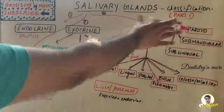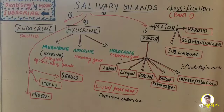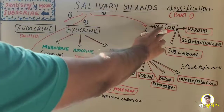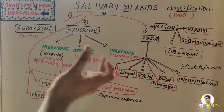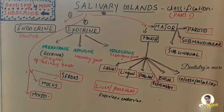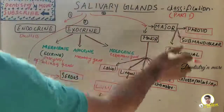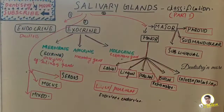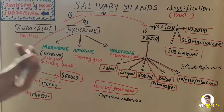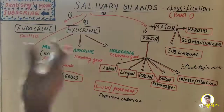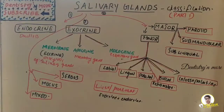Now moving to the classification of salivary glands. The basic classification is major and minor, based on size and location. The major salivary glands consist of three pairs — right and left — which are the parotid gland, submandibular gland, and sublingual gland. These paired glands are located outside the oral cavity and have ducts that secrete their products into the oral cavity.